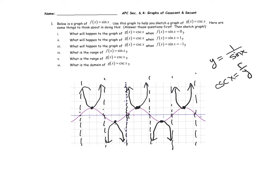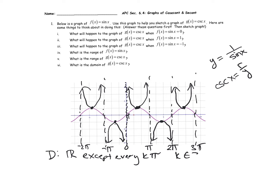Let's define the domain of cosecant of x. The domain is all reals except where it's undefined. It's undefined at zero, pi, two pi, three pi, negative pi, negative two pi, and so on — every k pi. So the domain is all reals except every k pi, where k is contained in the set of integers. The range is negative infinity to negative one, union one to infinity.